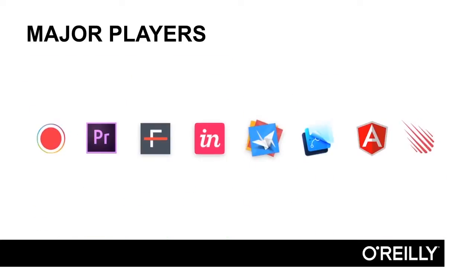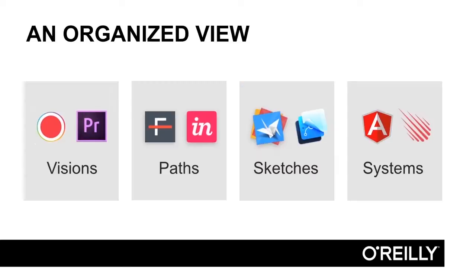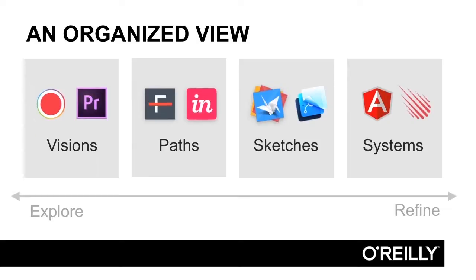As an alternative, I like to think of prototyping tools in four major buckets: visions, paths, sketches, and systems. These buckets organize products by the type of experience they enable, and not by any particular feature set. As a result, it has longevity, even as particular tools will come and go.